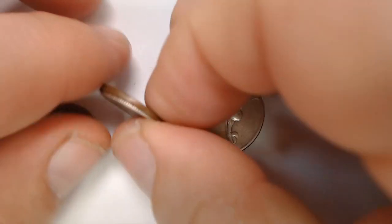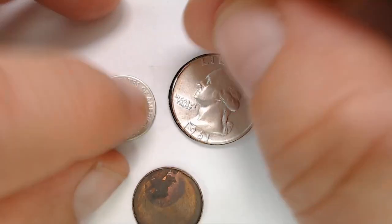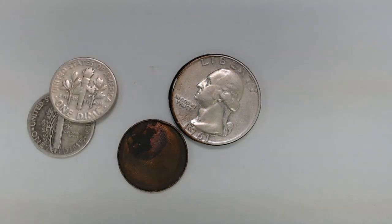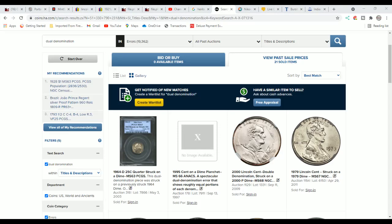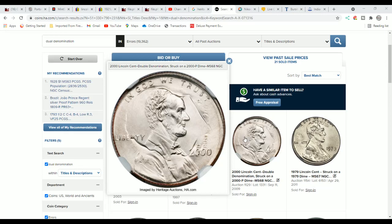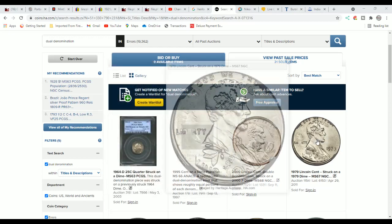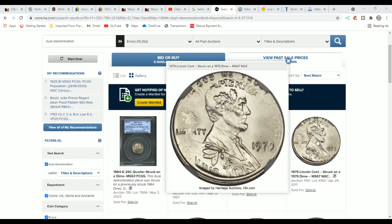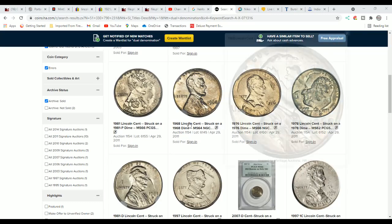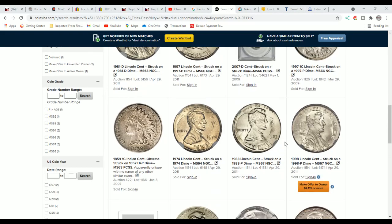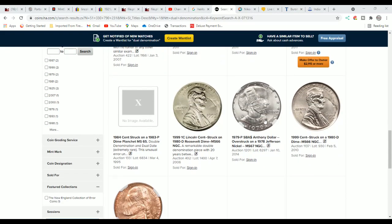Let's take a look over here at actual dual denominations. So when you're looking at this, you want to see this right here if you think you have an overstruck coin. This is a Lincoln cent struck on a 2000 dime. And here's another example. That's what you want to see. And you can scroll down, look at Heritage sold auctions. You can see all of these double denomination, dual denomination, and check out what they look like.